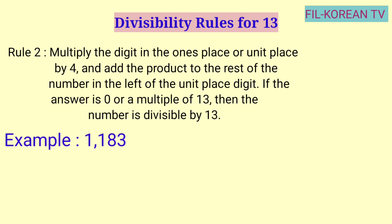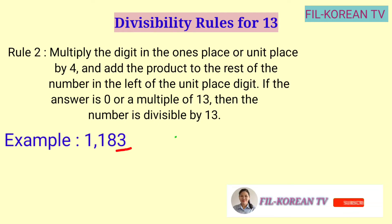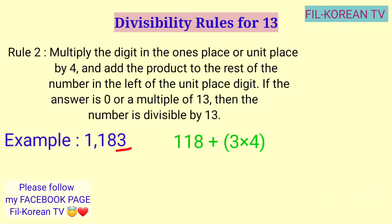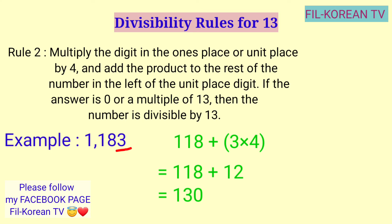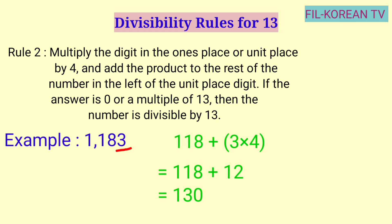Example: 1,183. Yung last digit na 3 — ito yung nasa 1's place or unit place — i-times natin yan sa 4. At ang answer ay i-plus natin sa natitirang number sa kaliwa ng 3. Ganito yung isosolve natin: 118 plus 3 times 4. I-times natin: 3 times 4 equals 12. Then i-plus natin: 118 plus 12 equals 130. Ang 130 ay multiple ng 13 — 13 times 10 equals 130. At dahil ang answer ay multiple ng 13, ibig sabihin ang given number na 1,183 ay divisible by 13.